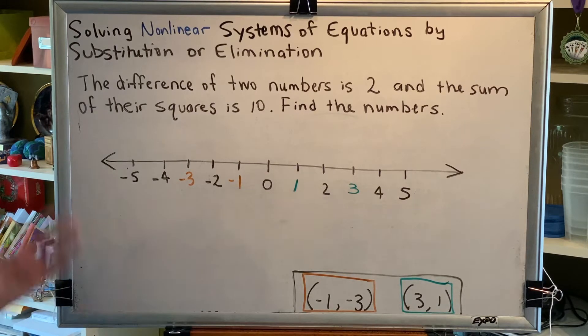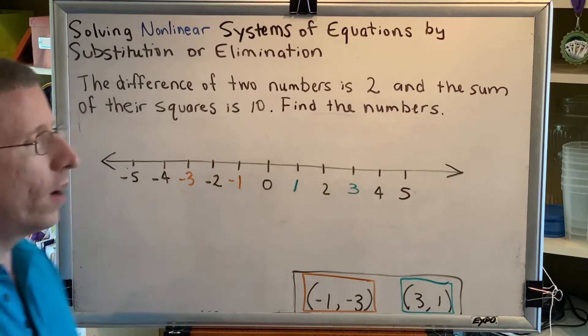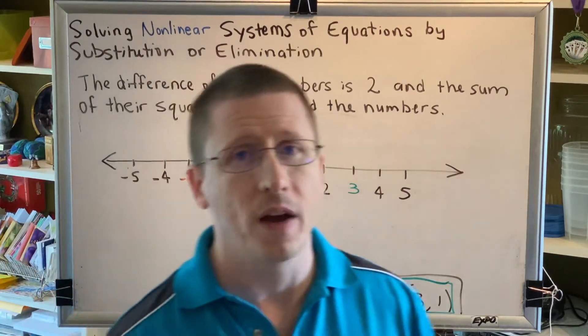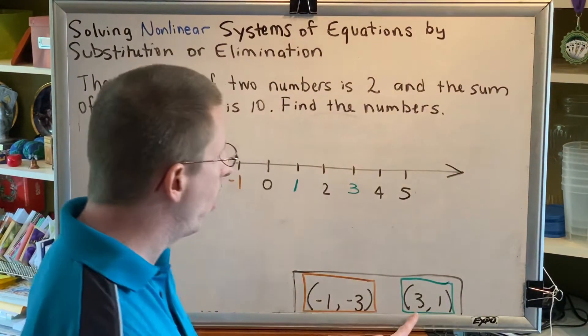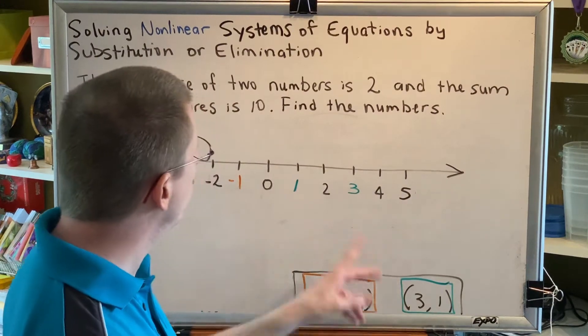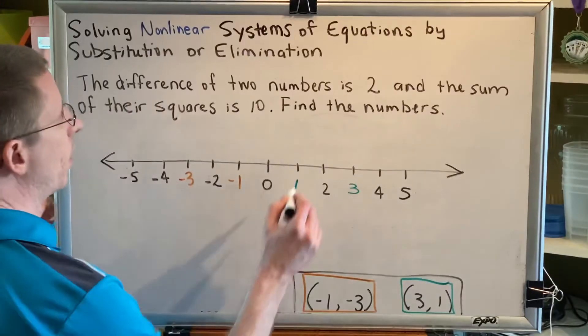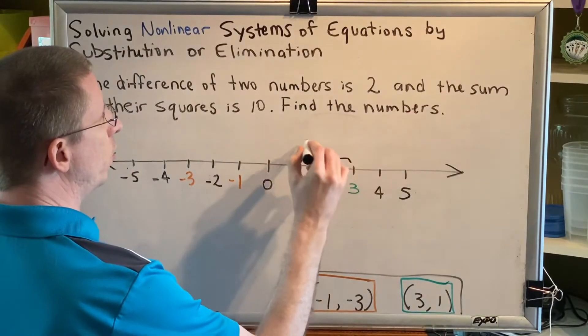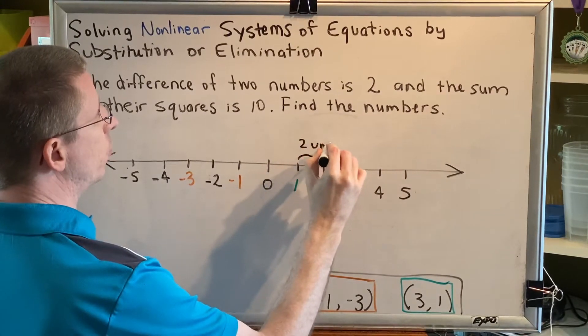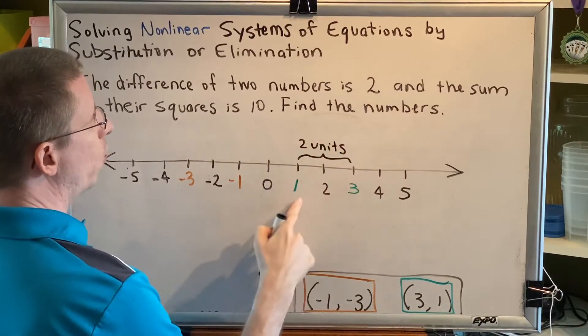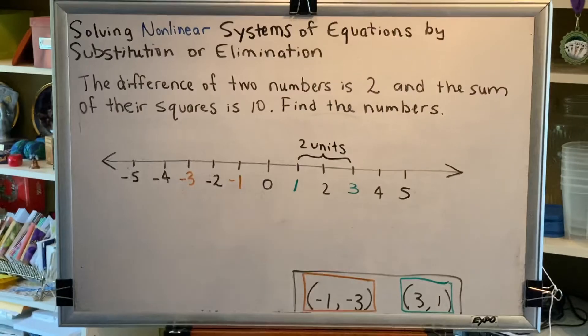First of all, when it says the difference of two numbers, one way of determining the difference of numbers is to find out how far apart they are on a number line. We can just put them on a number line and count the number of steps. There are two units between these two values. Between 3 and 1 is two steps, so the difference of those numbers is 2.